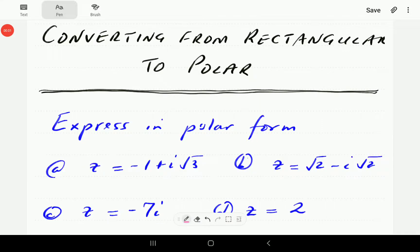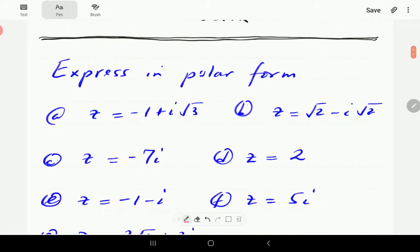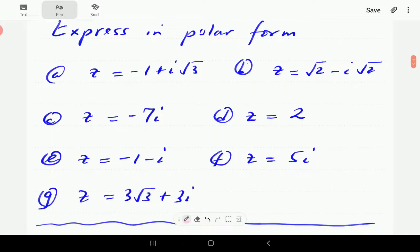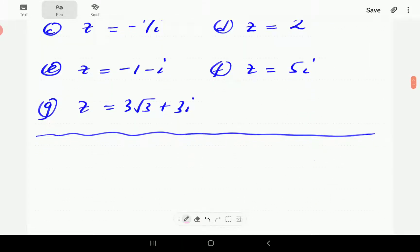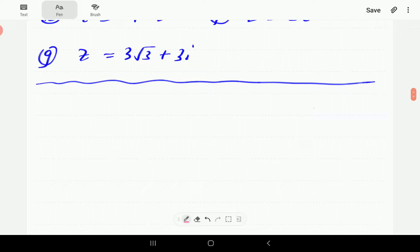In this video, I'm going to show you how to convert from rectangular form to polar form of a complex number. So these are the examples we are going to work through. These numbers are given in rectangular form, and we're going to convert them to polar form.